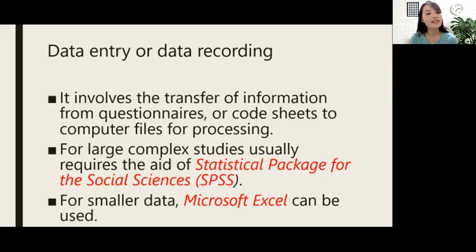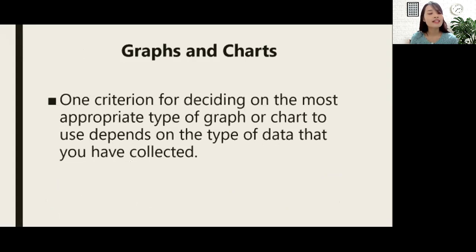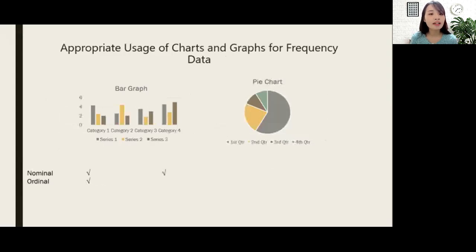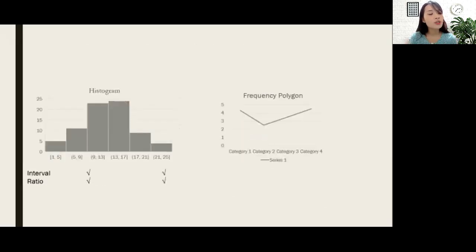For large, complex studies, we use the statistical package for the social sciences — we call it SPSS. For smaller data, Microsoft Excel can also be used. One criterion for deciding the most appropriate type of graph or chart depends on the type of data you have collected. For nominal data, you could use a bar graph and pie chart. For ordinal, you use a bar graph. For interval and ratio, you could use a histogram or frequency polygon.